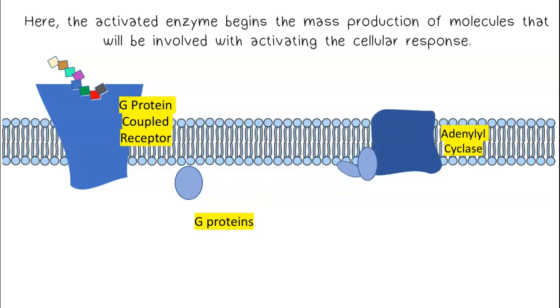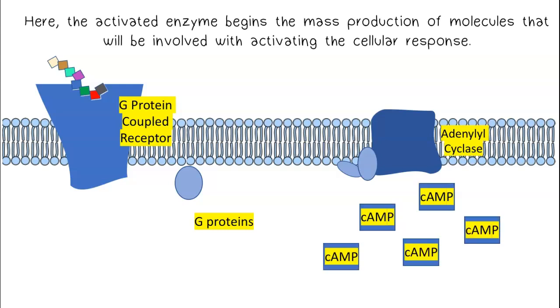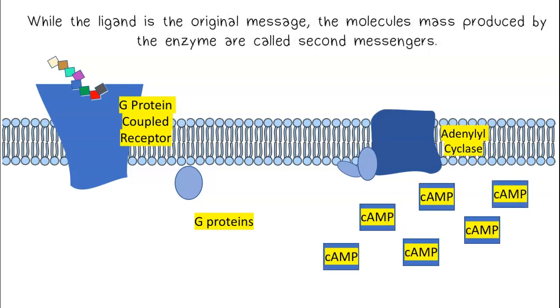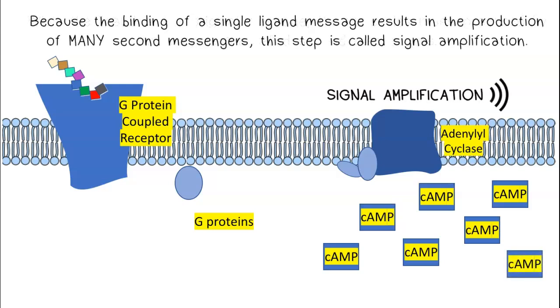Here, the activated enzyme begins the mass production of molecules that will be involved with activating the cellular response. While the ligand is the original message, the molecules mass produced by the enzyme are called second messengers. Because the binding of a single ligand message results in the production of many second messengers, this step is called signal amplification.